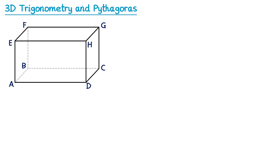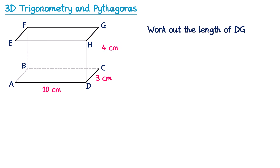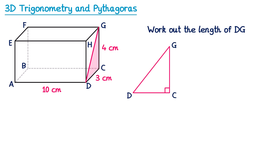Now let's have a look at some of the questions you may be asked. If we label on some of the lengths, we're going to start with some easier questions. Work out the length of DG. To work out the length of DG, the first thing to do is draw a line connecting D and G. Next we're going to look for a right-angled triangle that involves that line. Since DG is just on this outside face, it makes sense to choose triangle DCG.